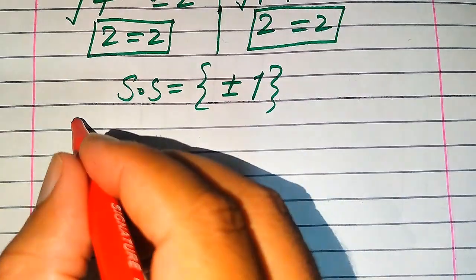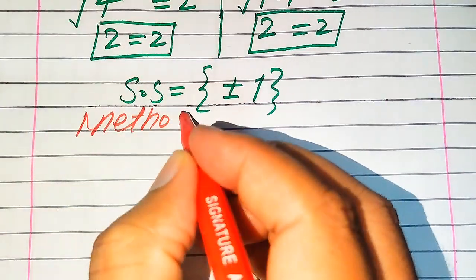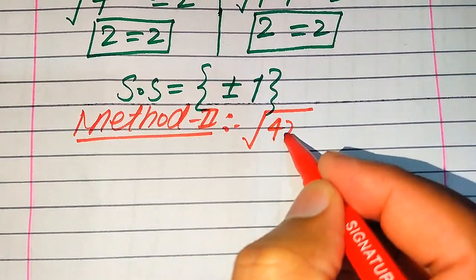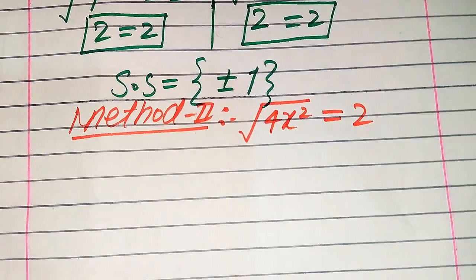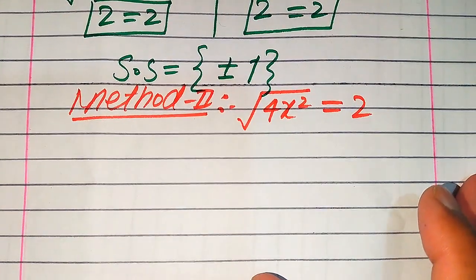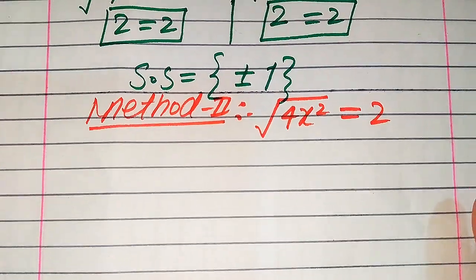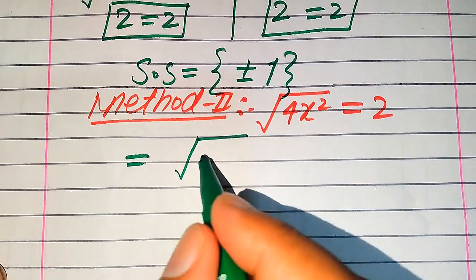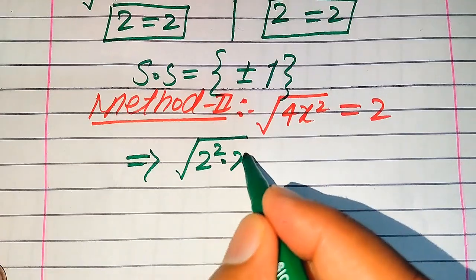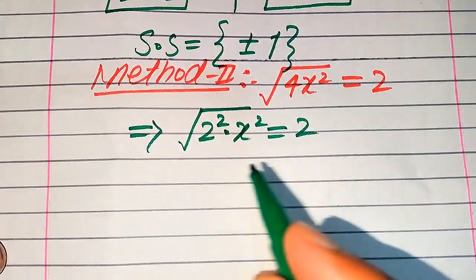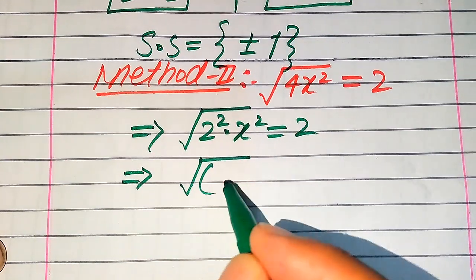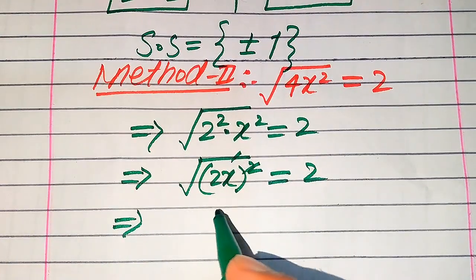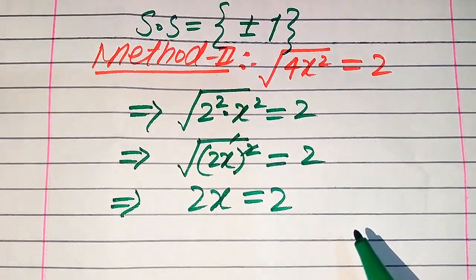Now we move to the second method. We copy down the given equation: the square root of 4 times x squared equals 2. In this method we focus inside the square root sign. Inside the square root we have 4 times x squared — we write 4 as 2 squared times x squared, which equals 2. We combine the squares inside the square root to get the square root of (2x) squared equals 2, and the square root and the square cancel, giving 2x equals 2.